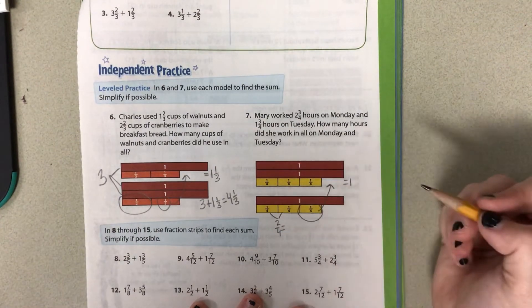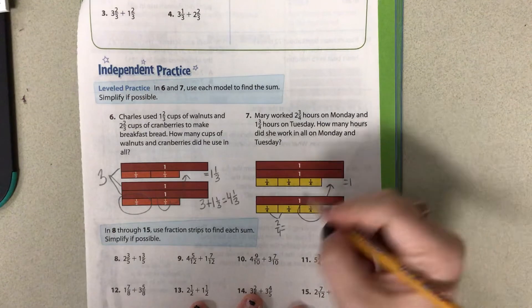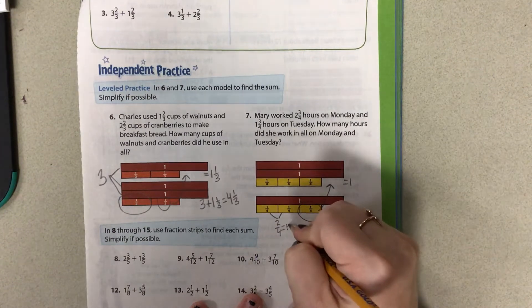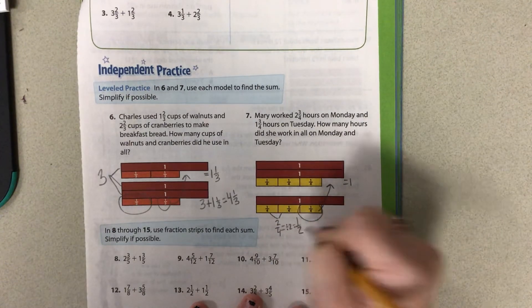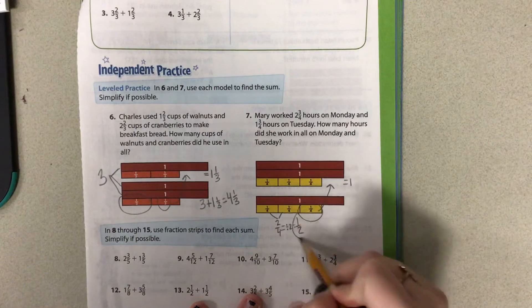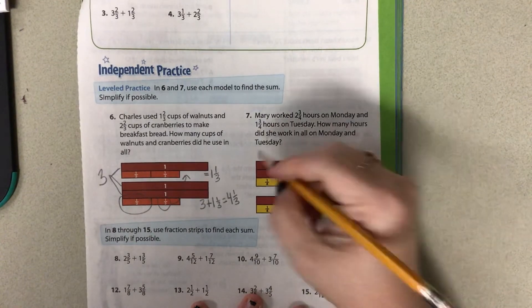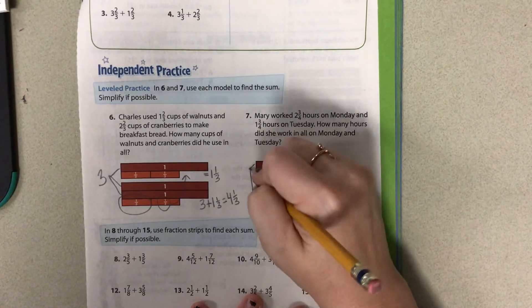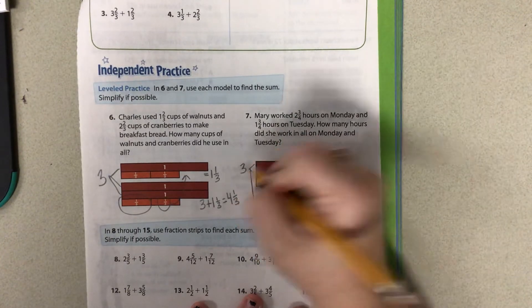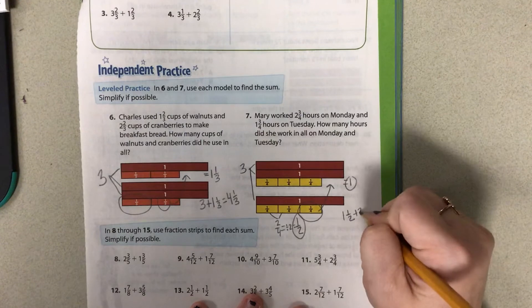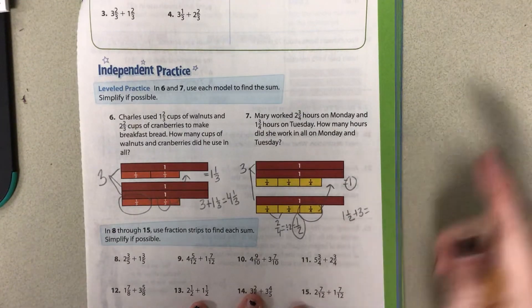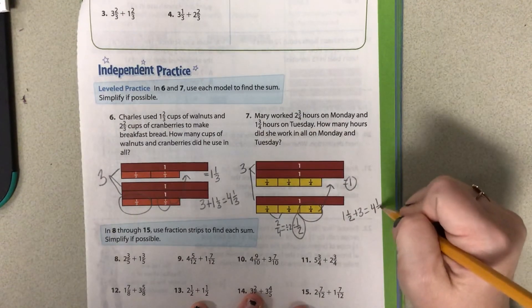So I have 2 fourths left over. I'm going to go ahead and simplify that. If I can divide both sides by 2, that gives me 1 half. So now I have a half and a whole. So that's going to give me 1 and 1 half. Then I'm going to look at my wholes there. And that gives me 3. So I'm going to add that to my fraction. And that gives me 4 and 1 half.